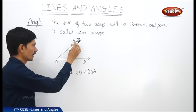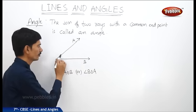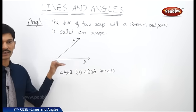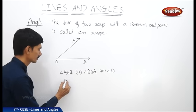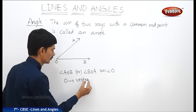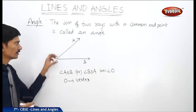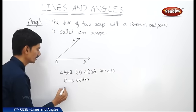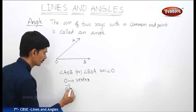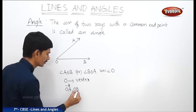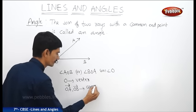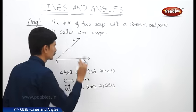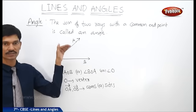The angle can be represented as angle AOB, angle BOA, or simply angle O. The common end point O is called the vertex of the angle. The two rays OA and OB which form the angle are called the arms or sides of the angle.